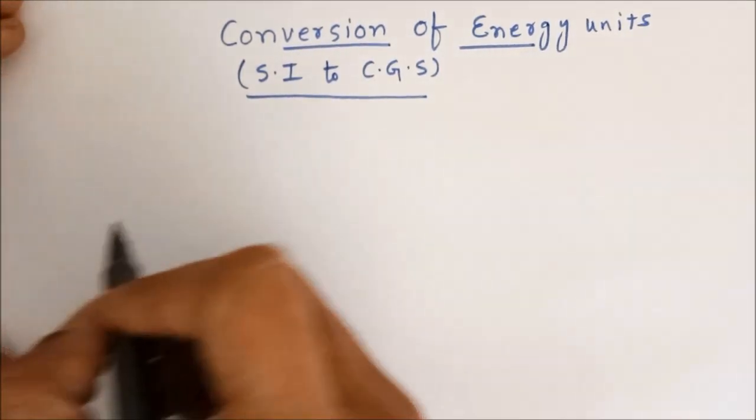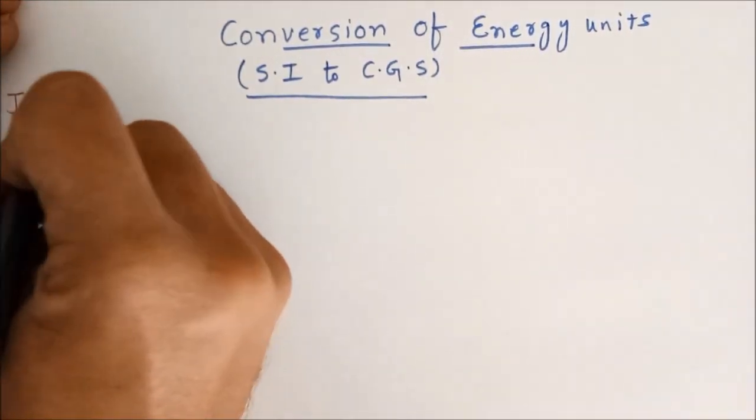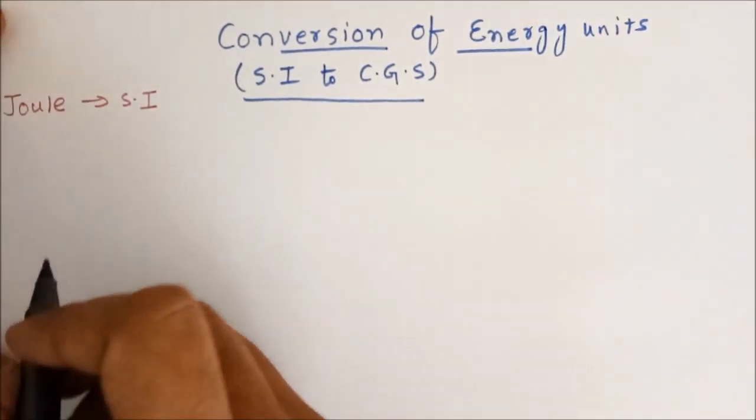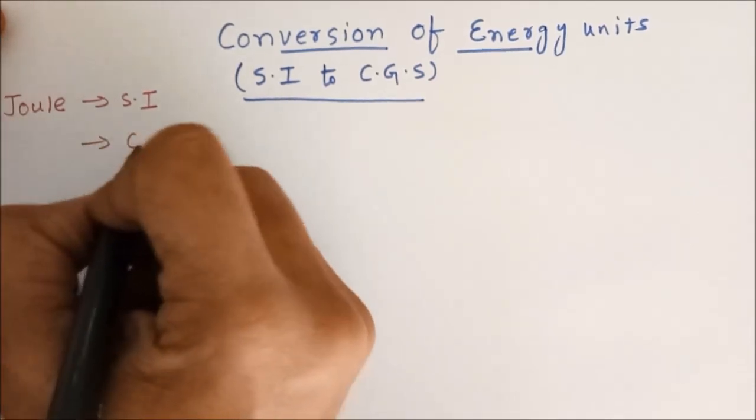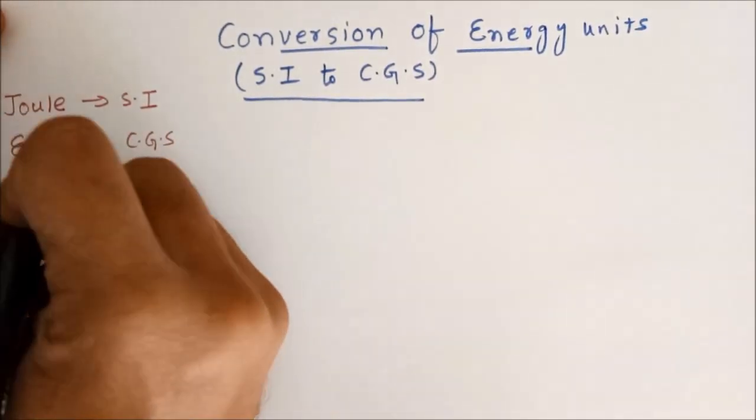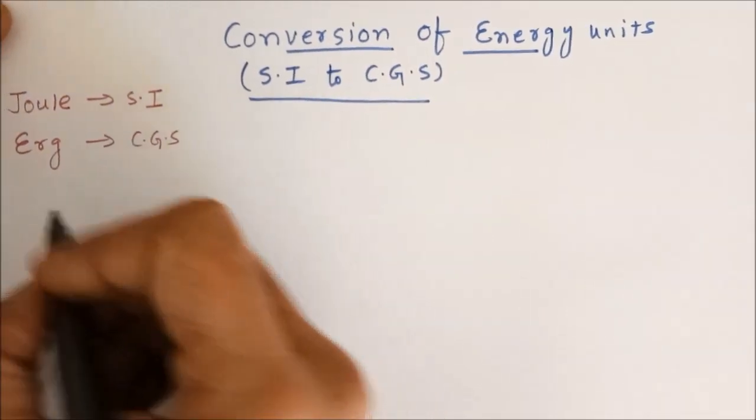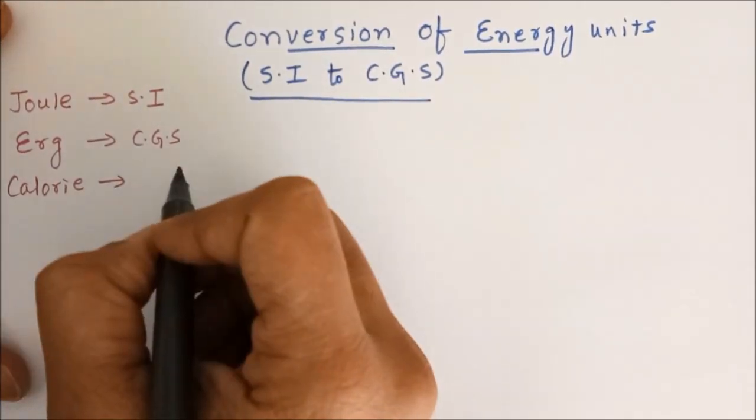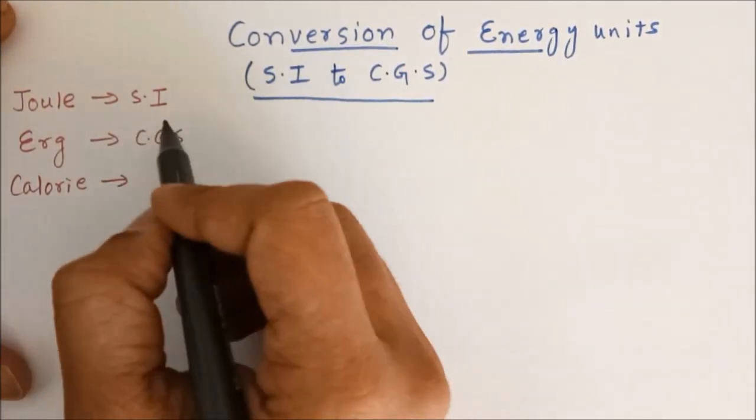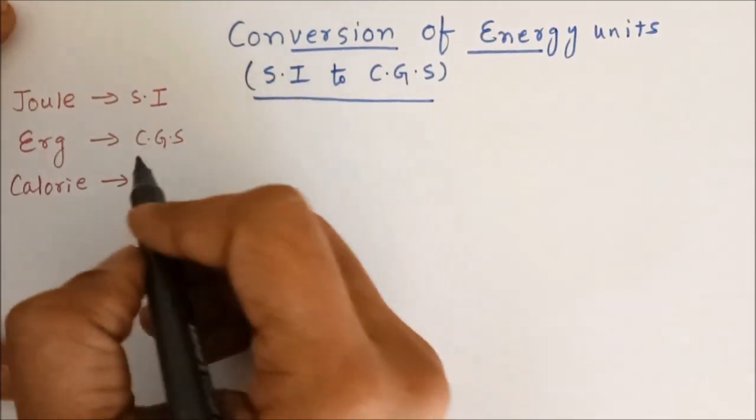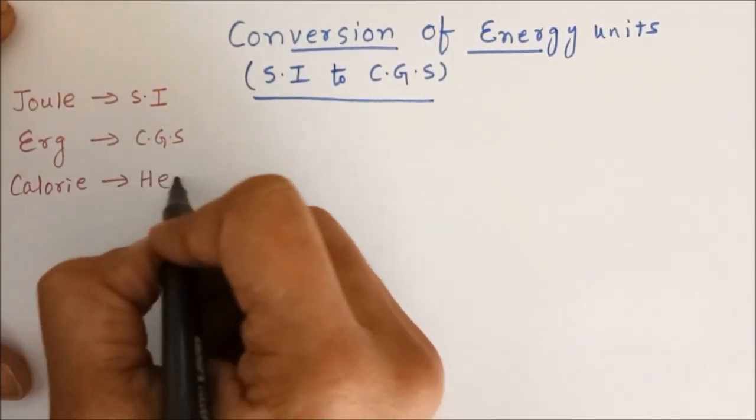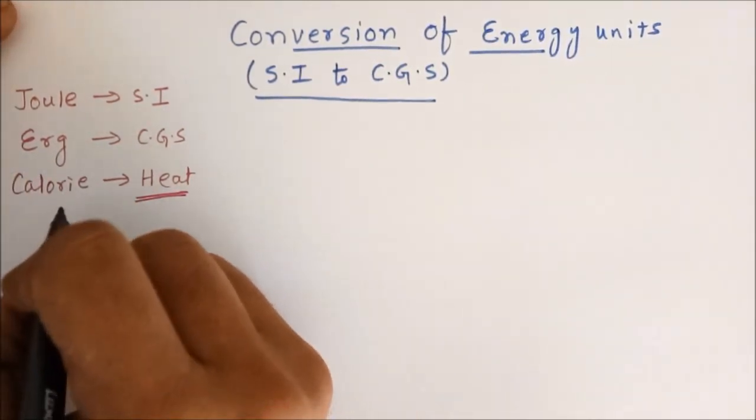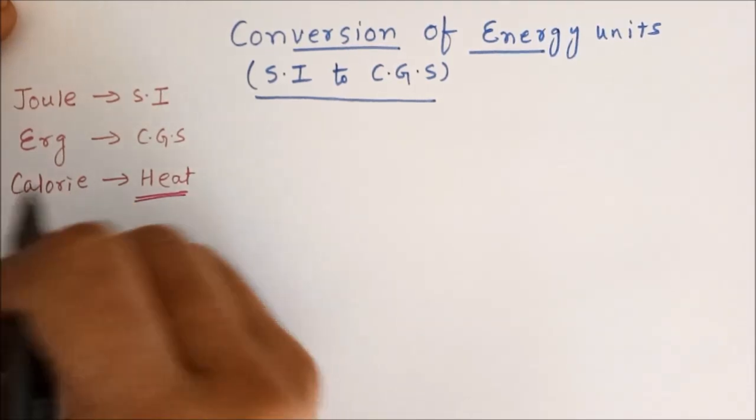In the previous section we learnt that joule is the SI unit of energy, CGS unit was erg, calorie was conventional unit, it is not SI unit neither it is CGS unit. We use it generally in thermodynamics, so normally when we are talking about heat we use this unit and this is not the SI unit, we may call this as a conventional unit, a general unit.